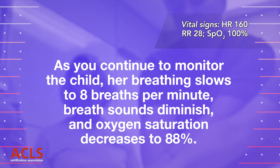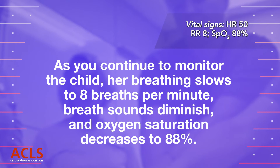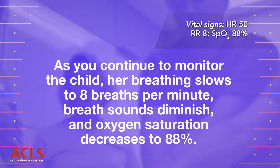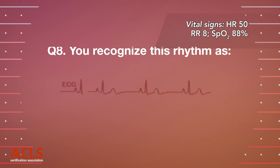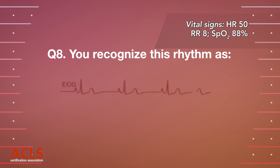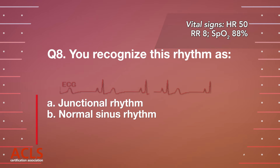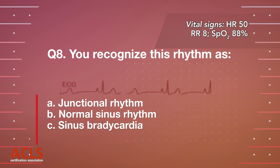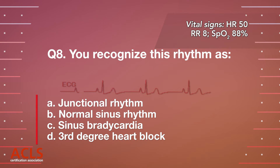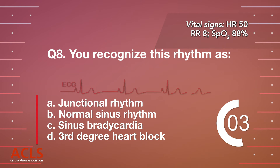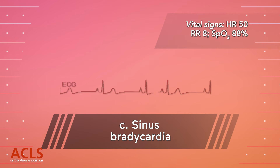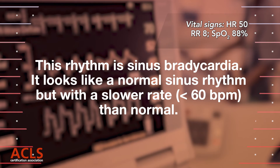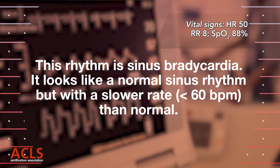As you continue to monitor the child, her breathing slows to 8 breaths per minute, breath sounds diminish, and oxygen saturation decreases to 88%. You look at the cardiac monitor and see this rhythm. Question 8: You recognize this rhythm as: A) Junctional rhythm; B) Sinus rhythm; C) Sinus bradycardia; D) Third degree heart block. Correct answer C — Sinus bradycardia. This rhythm looks like a sinus rhythm but with a slower rate, less than 60 beats per minute.